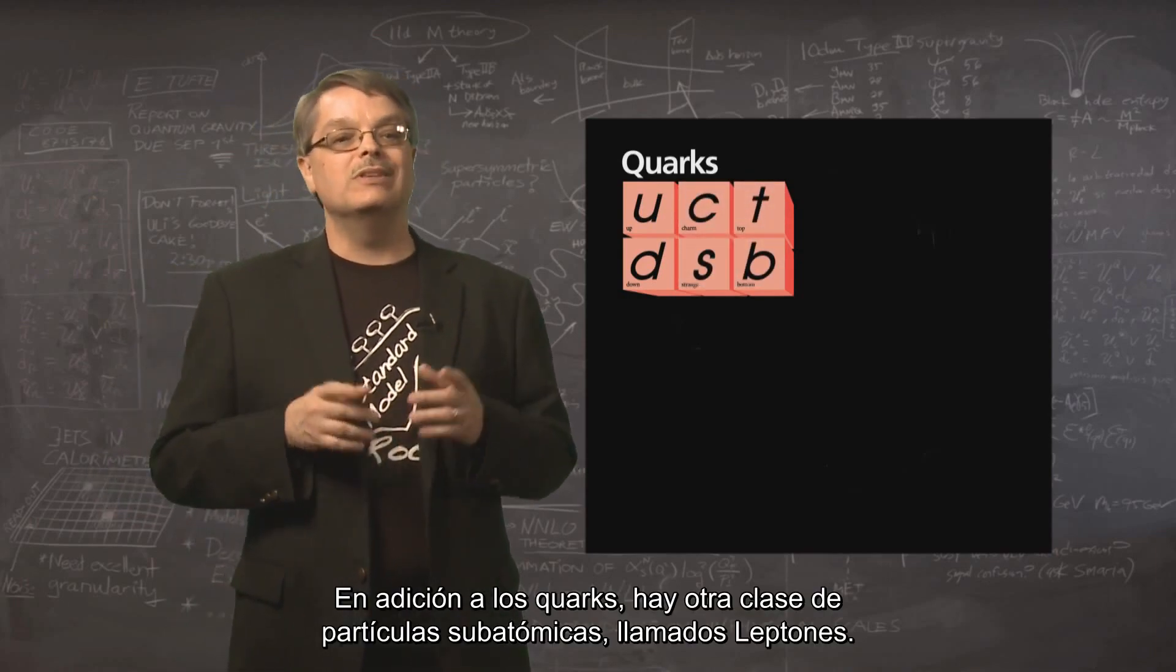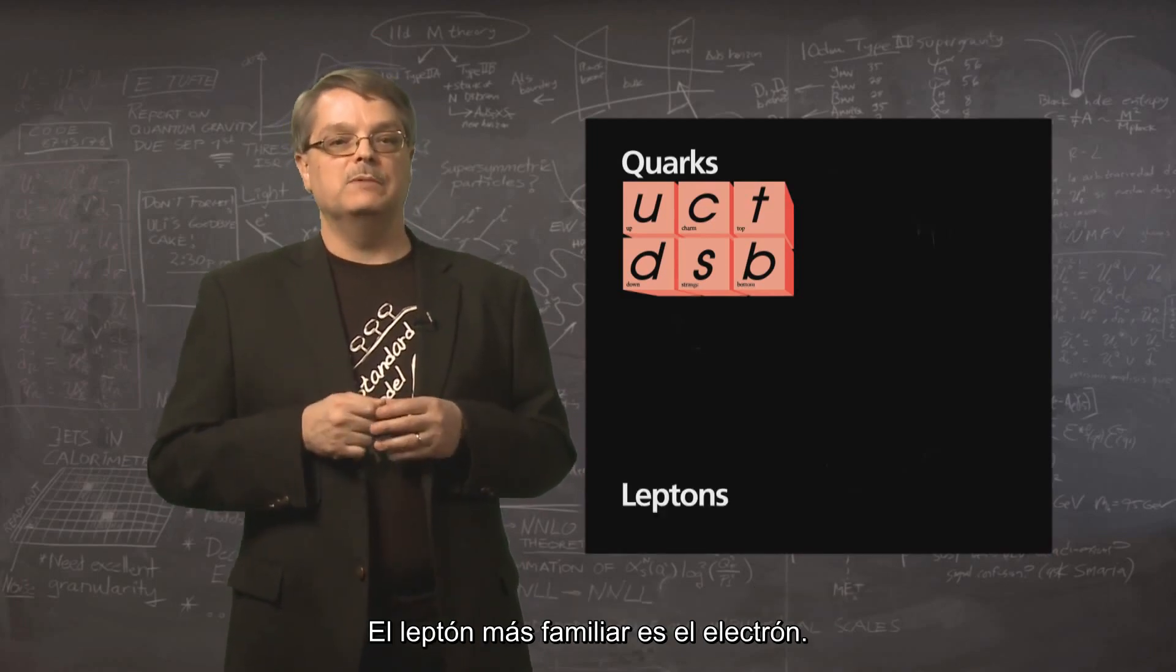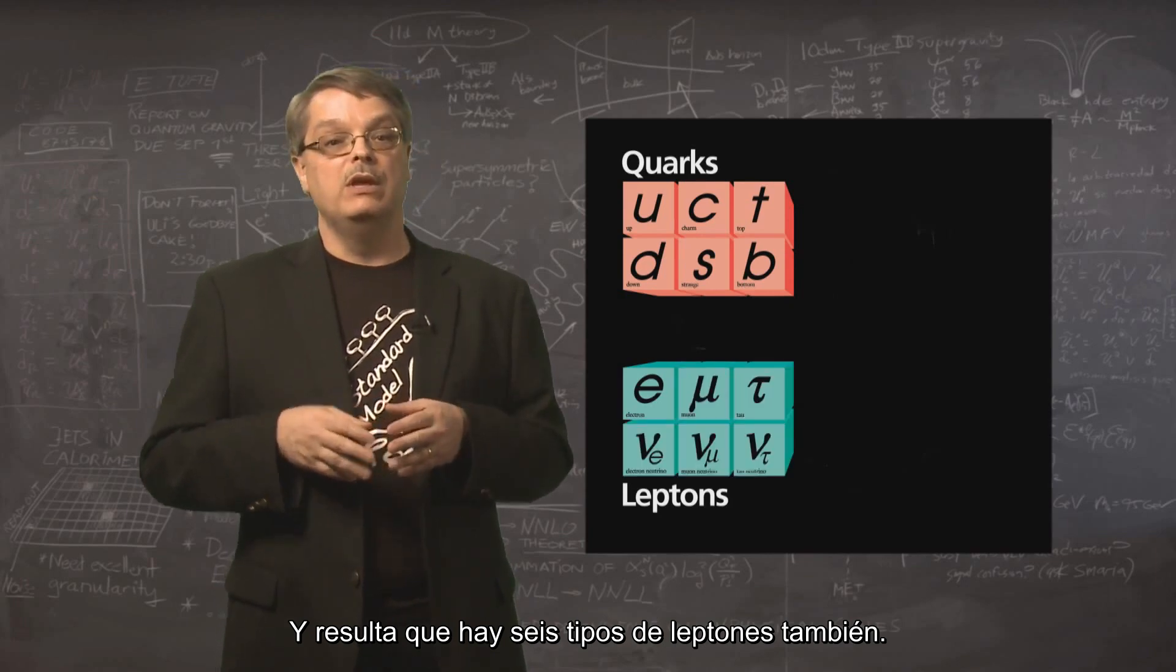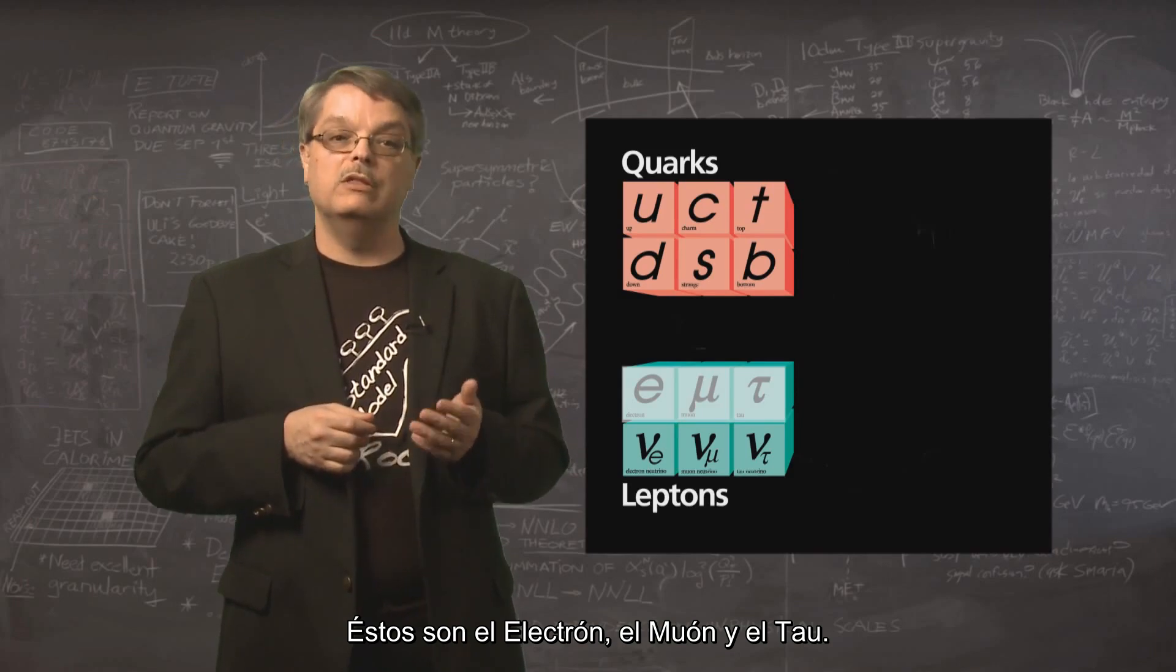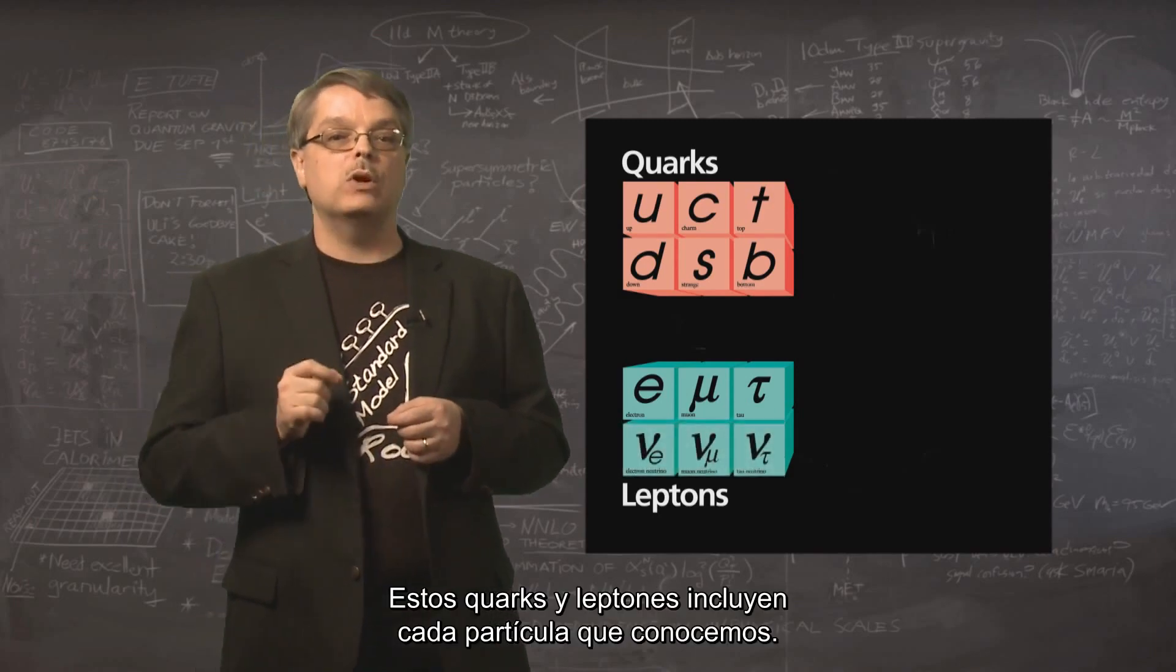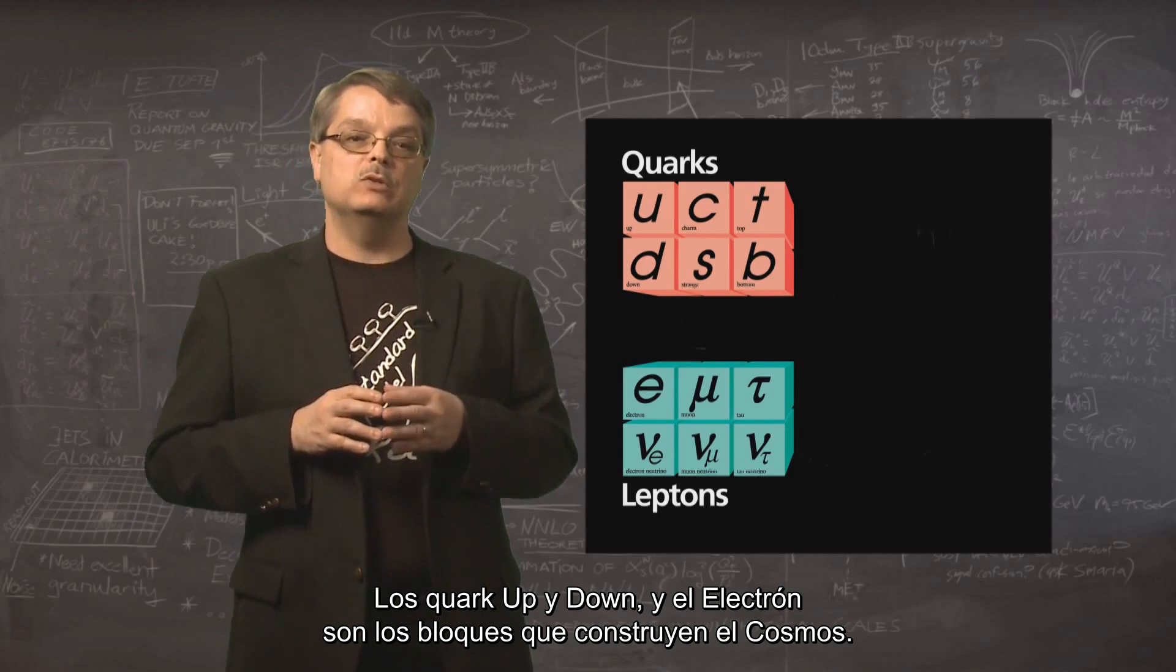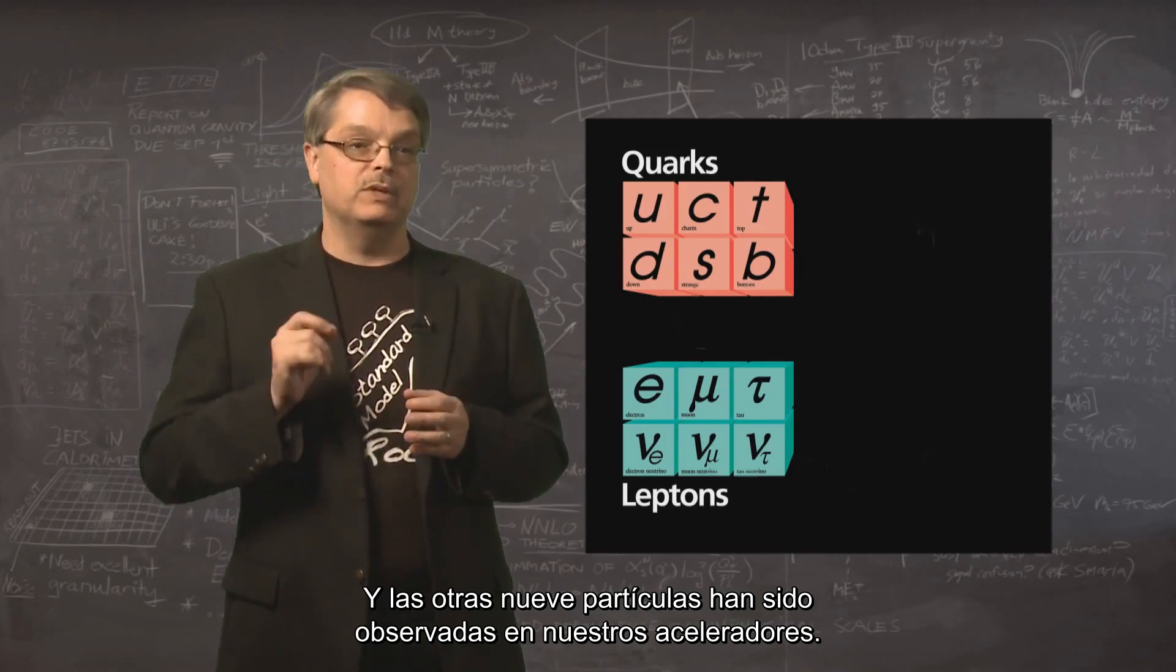In addition to the quarks, there's another class of subatomic particles called leptons. The most familiar lepton is the electron, although it turns out that there are six leptons as well. Three of these leptons have electrical charge. These are the electron, the muon, and the tau. The other three are neutrinos, which are electrically neutral. These quarks and leptons include every particle that we know of. The up and down quarks and the electron are the building blocks of the cosmos, and the other nine particles have all been observed in our accelerators.